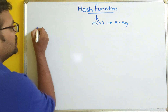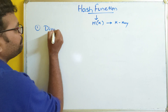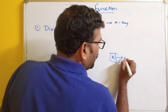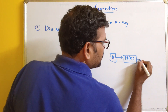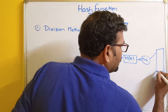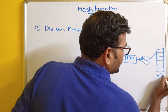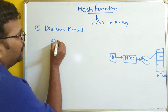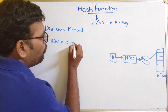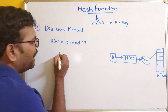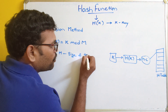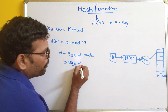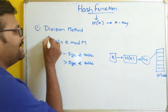So there are a few hash functions used to produce the hash code. The first one is the division method. In this method, the hash function is K modulo M, where M is the size of the table — or it can be greater than the size of the table, but not less. This is the division method.